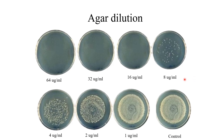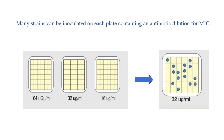By calculating the MIC, we can see that 8 micrograms per milliliter is the MIC of this particular drug towards the bacteria. Another advantage of agar dilution is that many strains can be inoculated on each plate containing antibiotic dilution for determining the MIC of the organism towards the antibiotic.